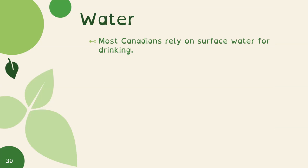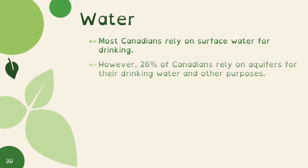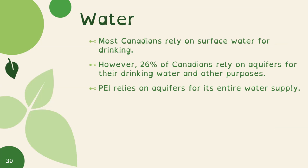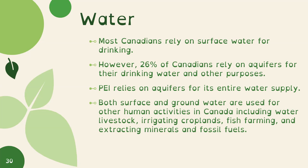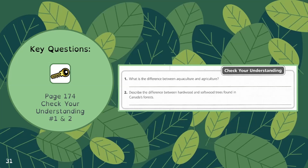Both surface and groundwater are used for other human activities in Canada, including watering livestock, irrigating croplands, fish farming, and extracting minerals and fossil fuels. Now that we've looked at all those natural resources, you can do the check your key questions on page 174. Now let's look at non-renewable resources. Currently, without Canada's oil and gas sectors, Canada's economy would shrink by more than 50%. Canada's many deposits of minerals and metals are also major sources of economic wealth.